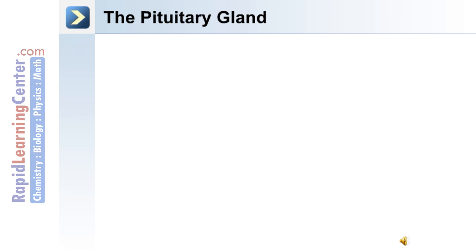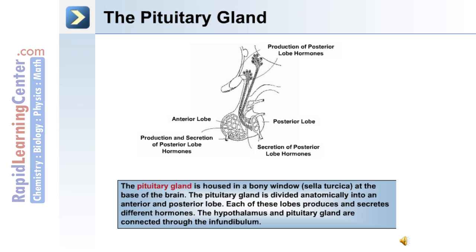The major gland of the endocrine system is the pituitary gland. This gland is housed in a bony window known as the sella turcica at the base of the brain. The pituitary gland is divided anatomically into an anterior and posterior lobe, each producing and secreting different hormones. The hypothalamus and pituitary gland are connected through the infundibulum.